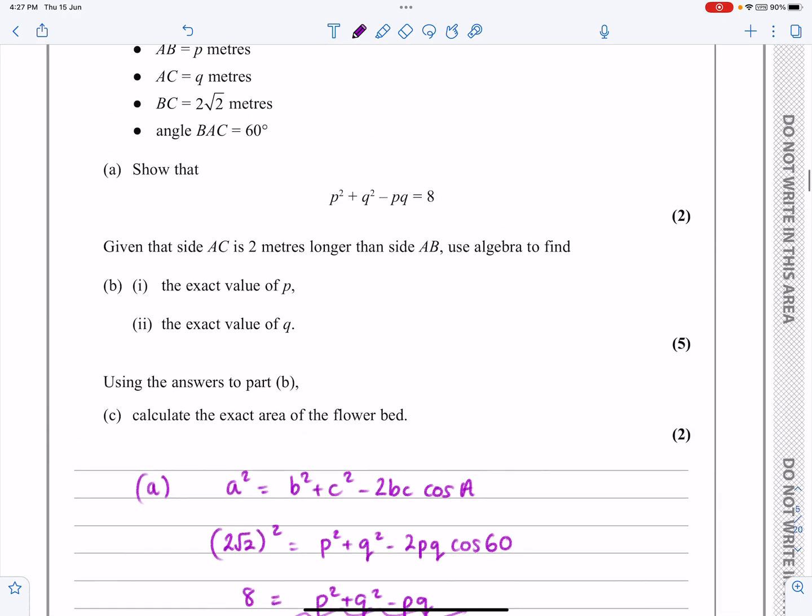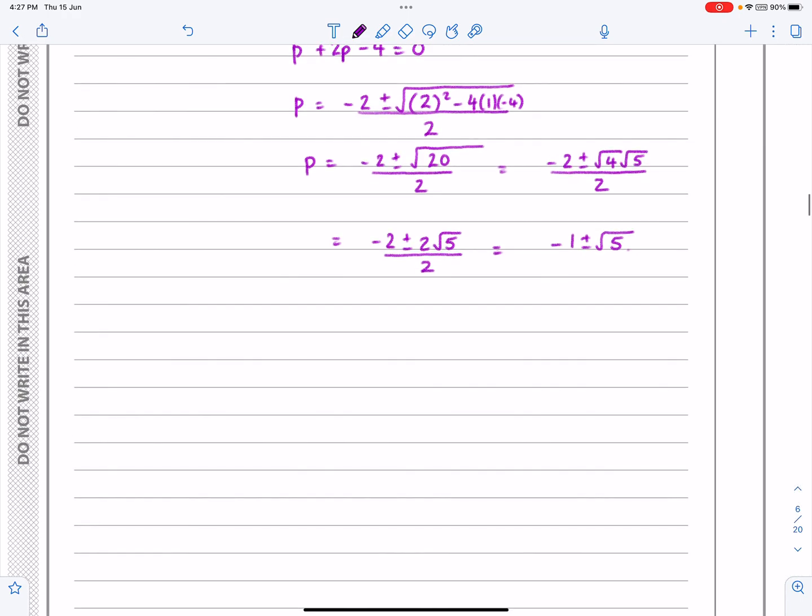Does P have to be positive? Of course, it's a length. P has to be positive because it's a length. So P is actually going to equal -1 + √5. If you want to get all the marks for this question, take extra time while you're doing it to make sure you're going to get the marks. Q was equal to P + 2, so it's -1 + √5 + 2, which works out to be 1 + √5.